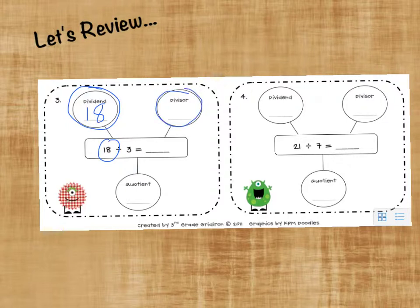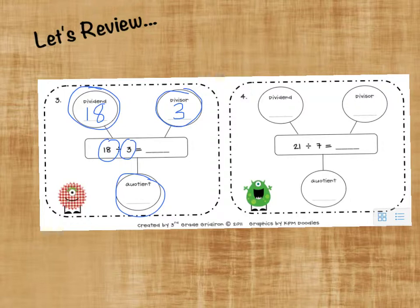Your divisor is the other number that you're dividing — it's the number of groups that you're going to put the big number, the dividend, into, or it's the number that you're going to put into each group. And then your quotient is the answer to a division problem. So 18 divided by 3 — 18 little cute monsters divided into 3 groups would give us 6 monsters in each group. The 6 is our quotient.